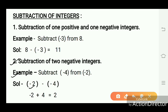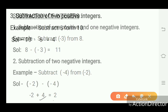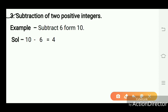Case two: subtraction of two negative integers. Example: subtract minus four from minus two. Minus two minus minus four becomes minus two plus four, because minus minus is plus. Since minus plus is minus and four is greater than two, we get positive two. Case three: subtraction of two positive integers. Example: subtract six from ten — ten minus six equals four.